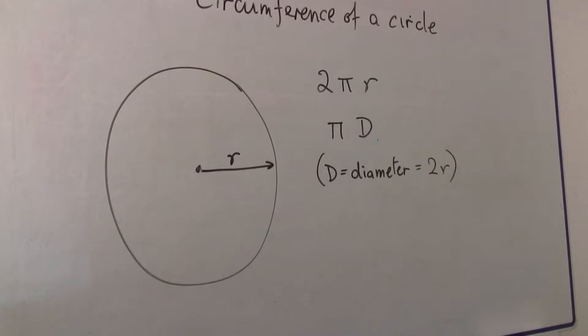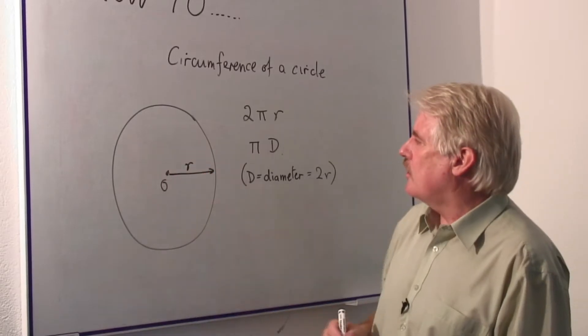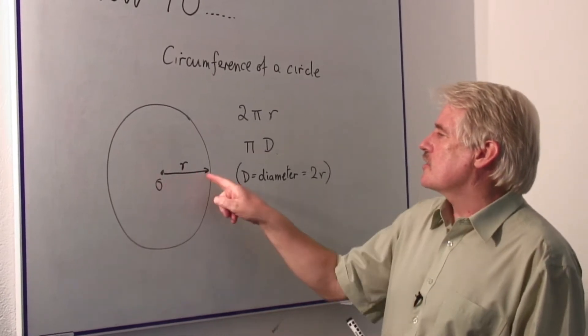Well here you can see our circle and its centre, O, and radius R.